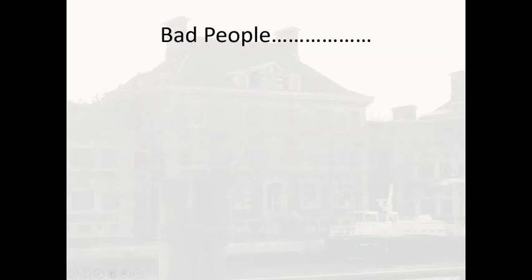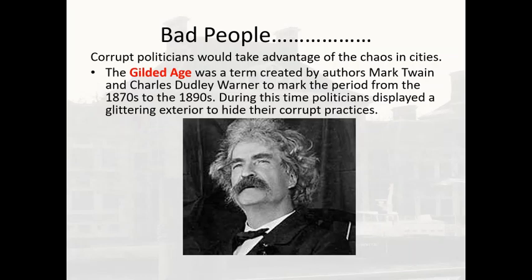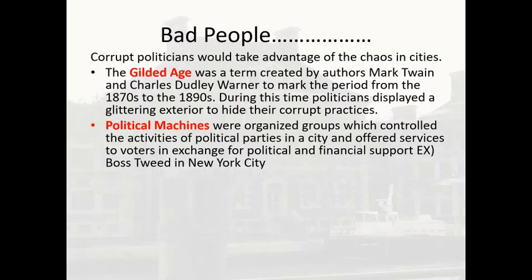As that clip shows, there were bad people who wanted to take advantage of the chaos in cities, and some of these people were politicians. Corrupt politicians would take advantage of the chaos. This age — from the 1870s to 1890s — would be called the Gilded Age, a term created by authors Mark Twain and Charles W. Warner. Something that's gilded looks shiny and cool on the outside but is not so good on the inside. These politicians displayed a glittering exterior to hide their corrupt practices and developed political machines — organized groups which controlled the activities of political parties in the city and offered services to voters in exchange for political and financial support.